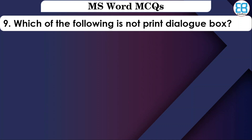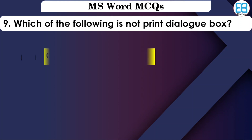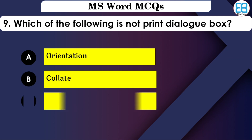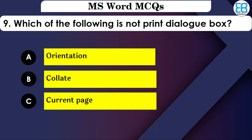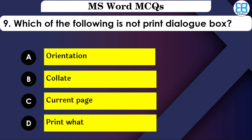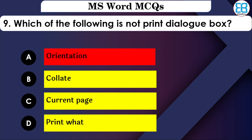Which of the following is not in the Print dialog box? The options are: Orientation, Print Current Page, or Print What. The correct option is Orientation — Orientation is not available in the Print dialog box.